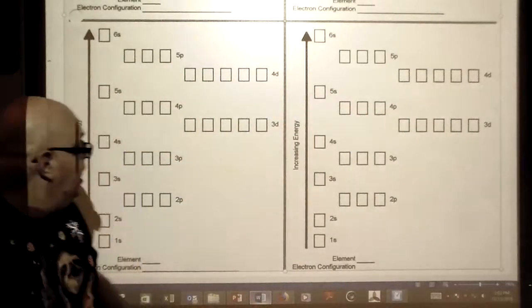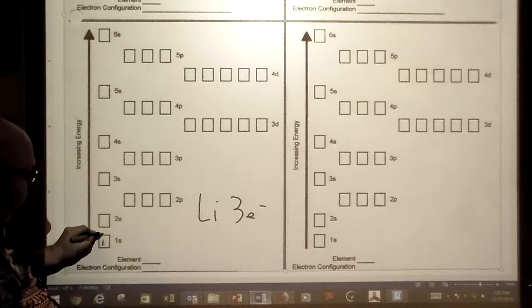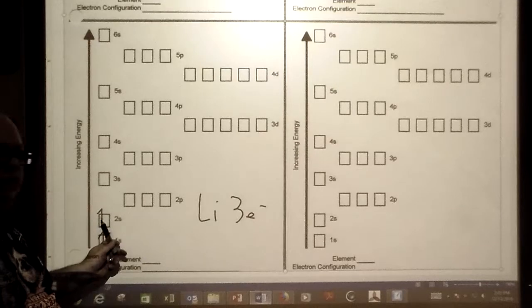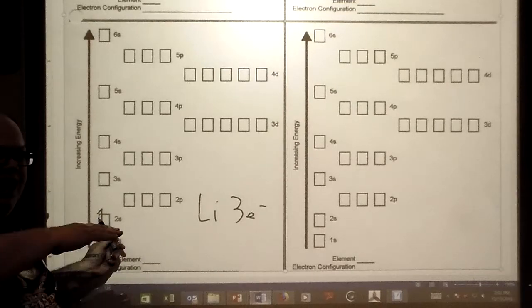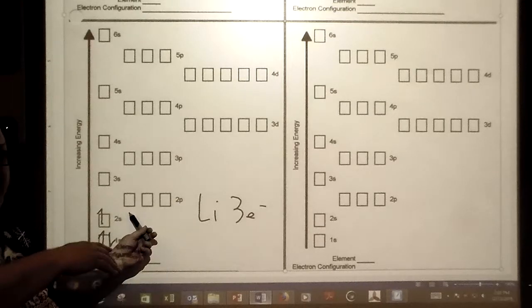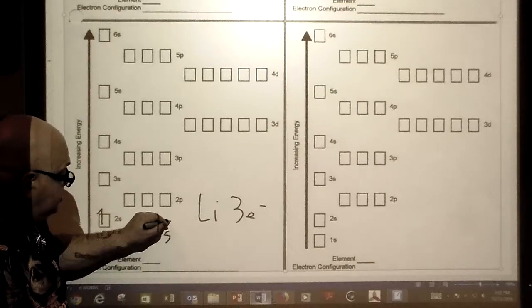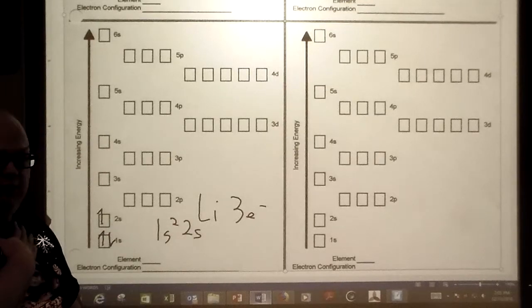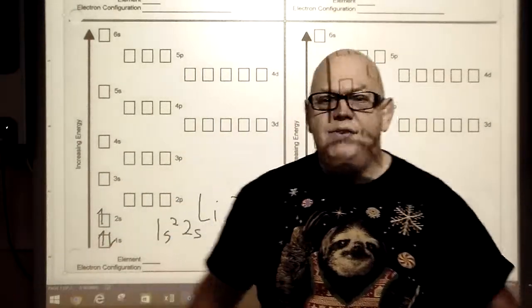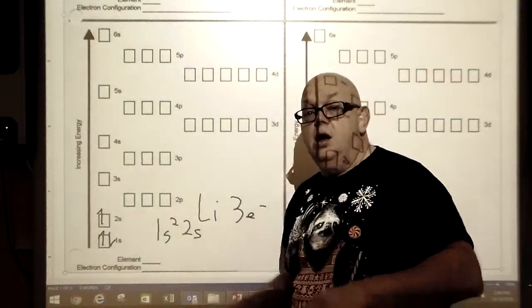Let's check out lithium. Lithium is element number three, so lithium has three electrons. We'll do one, two, and then our third one we'll put in 2s. Why aren't we putting it in 2p? Because you're going for the lowest available open energy level, and 2s is a little bit less energy than 2p. Our electron configuration is 1s² 2s¹.